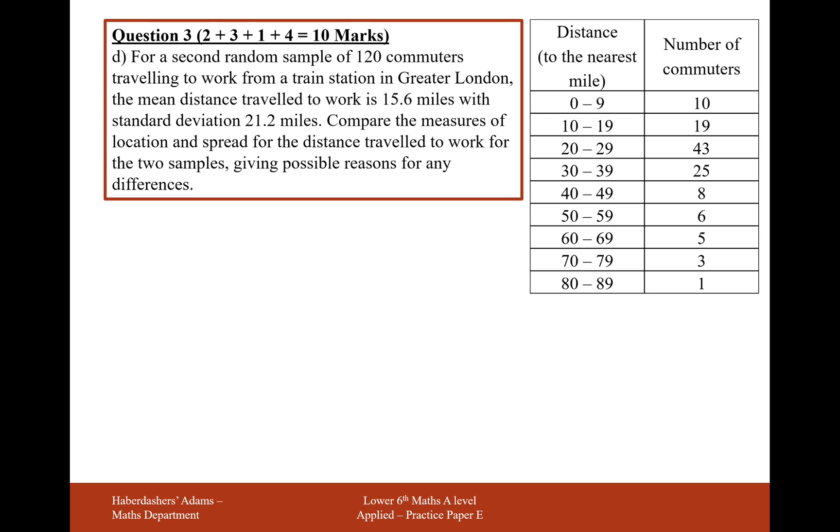Okay, part D. For a second random sample, 120 commuters travelling to work from a train station in Greater London. The mean distance travelled to work is 15.6 miles with standard deviation 21.2 miles. Compare the measures of location and spread for the distances travelled to work for the two samples, giving possible reasons for any differences.